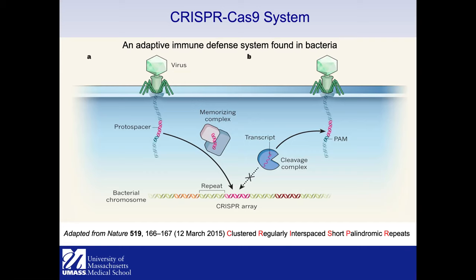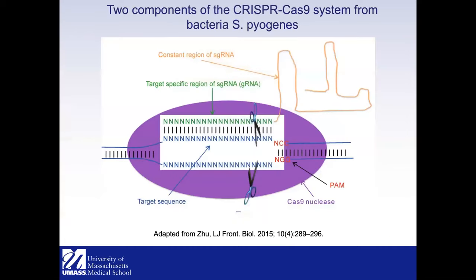When the same type of virus invades again, the DNA gets recognized by this protospacer, the complex cleaves it, and thereby destroys the virus. In 2012, several groups independently discovered that this system can be engineered to cleave any type of DNA — not just bacterial DNA.